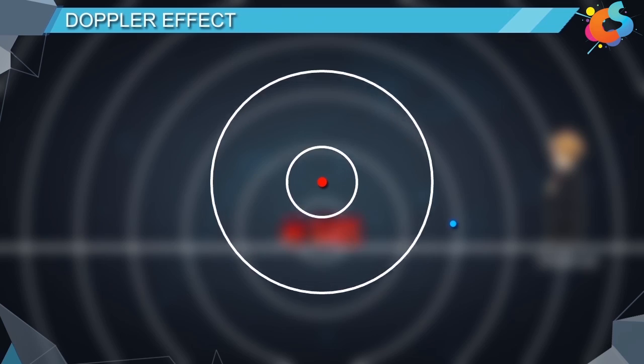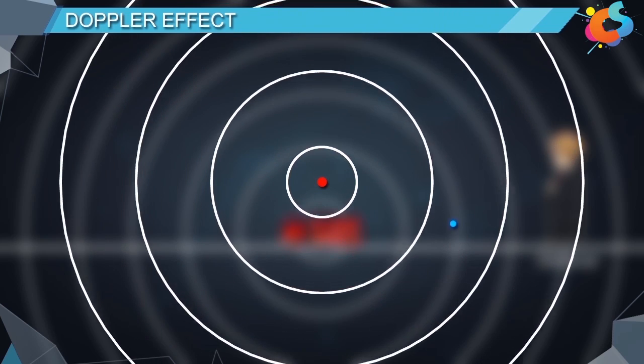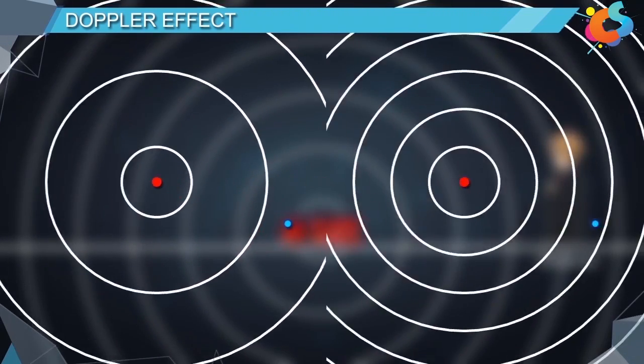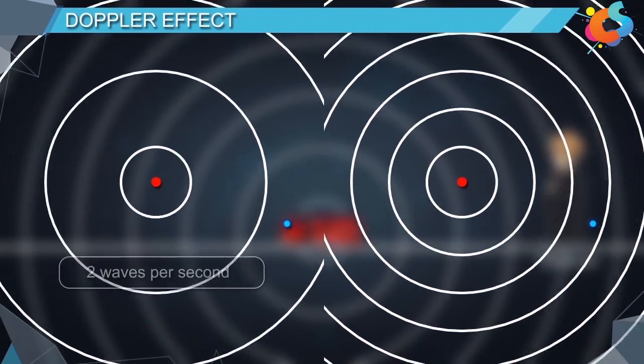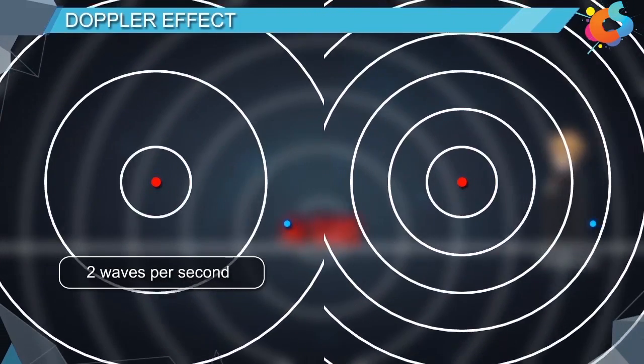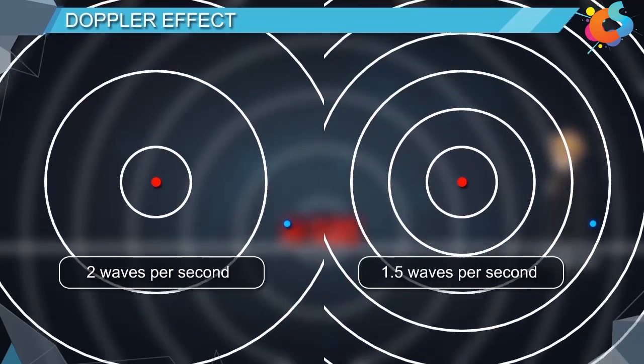Frequency of a wave is the number of waves that passes a given point in one second. In this case it is two waves per second, and in this case it is 1.5 waves per second, or three waves every two seconds.